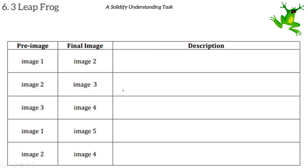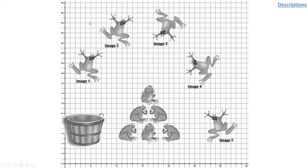In your notebook you have a table and a graph — I'll also have a copy of the graph for you in class. The first column is your pre-image, the second column is your final image, and the third column is where you describe what's going on using the language of transformations: reflection, rotation, or translation. On the graph you have image one through image five.